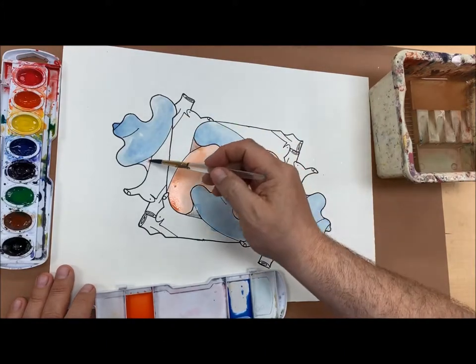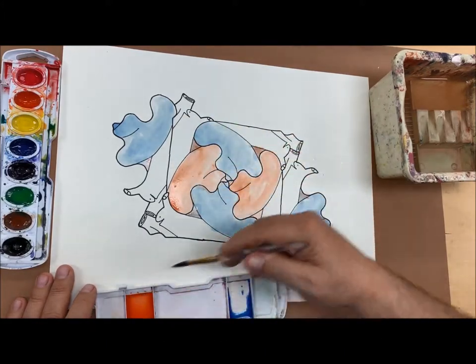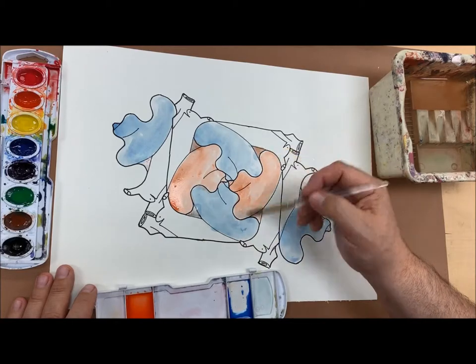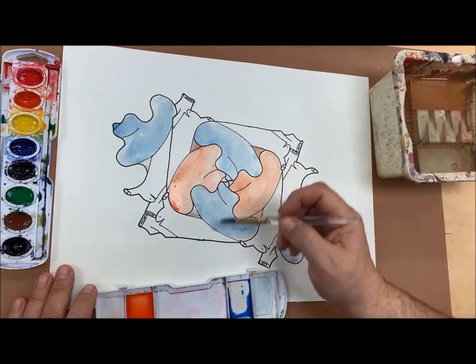Now I actually added some orange to the blue because orange and blue are opposite colors. So it makes for a brown which is good for a shadow. And I did want to have a shadow in there.